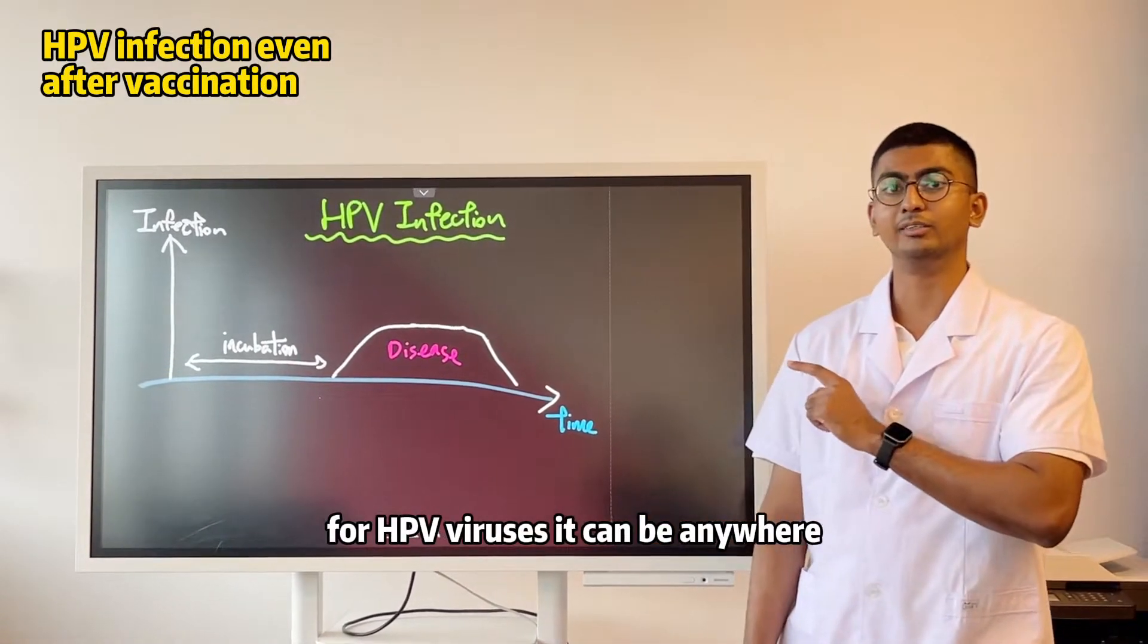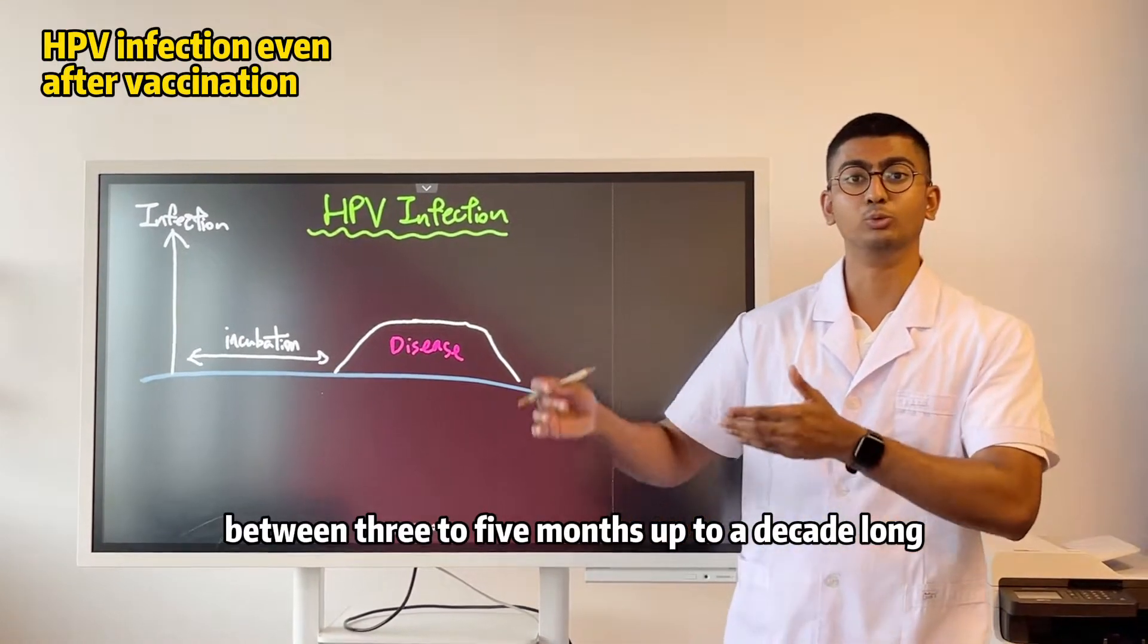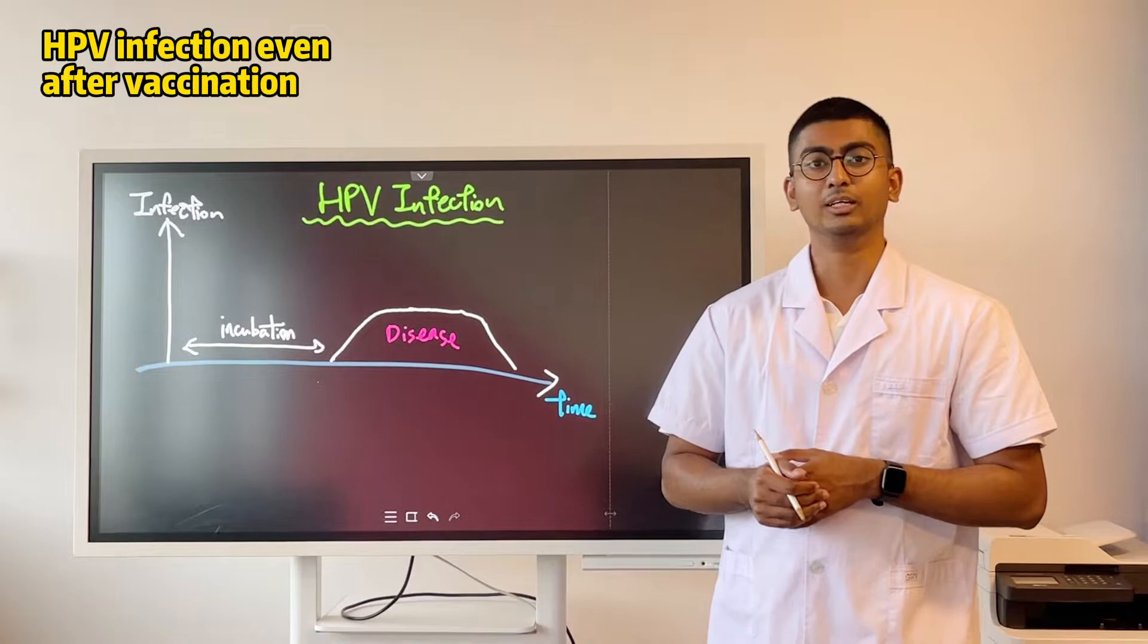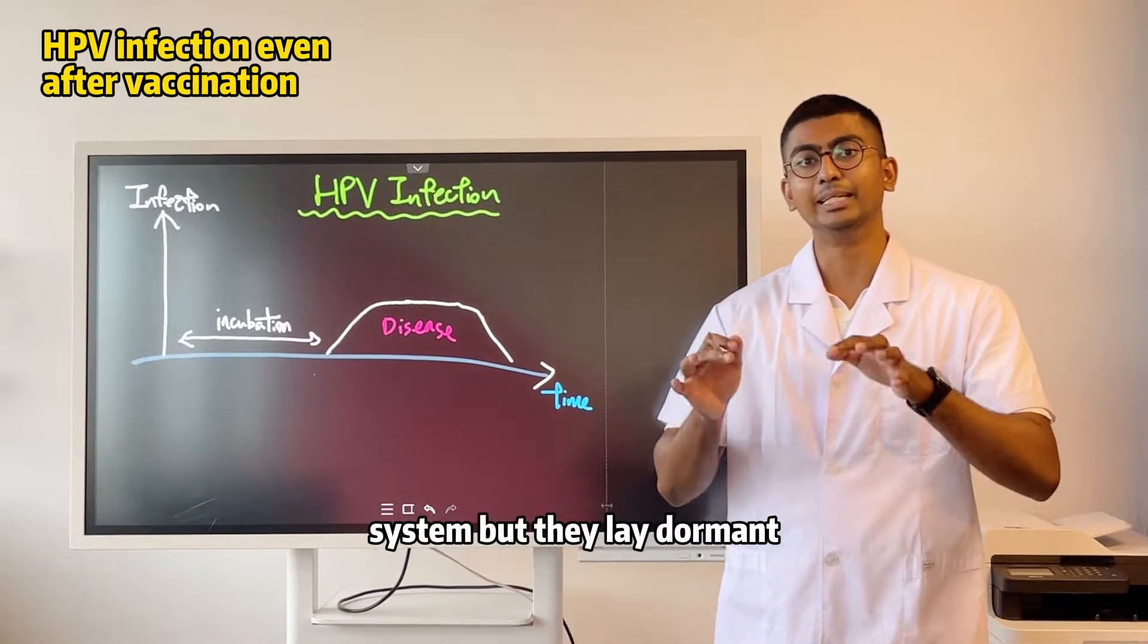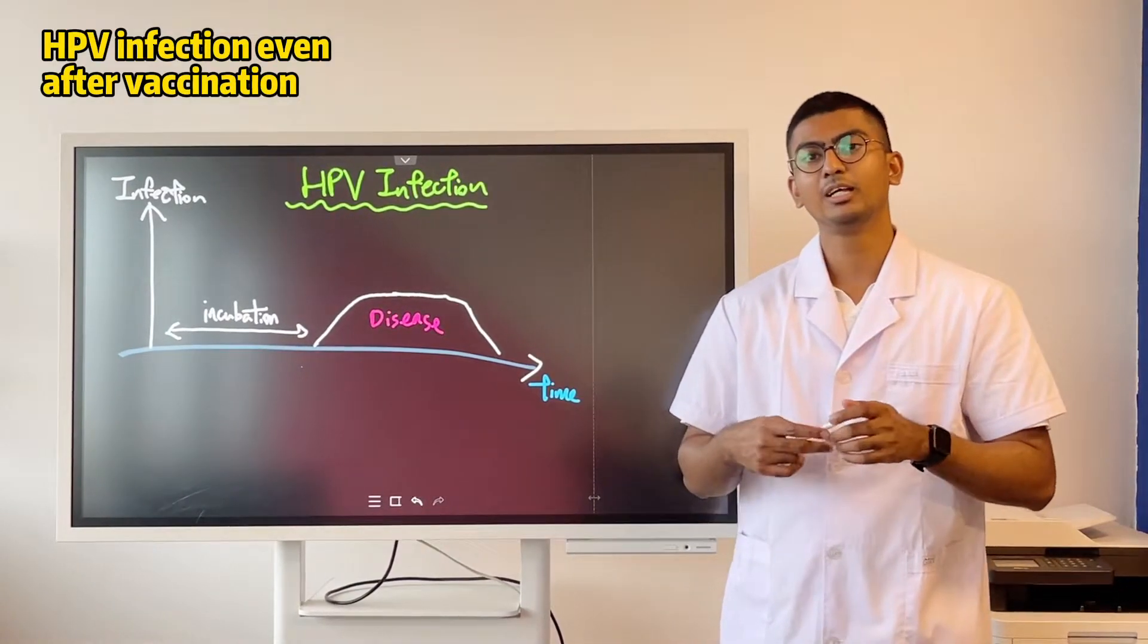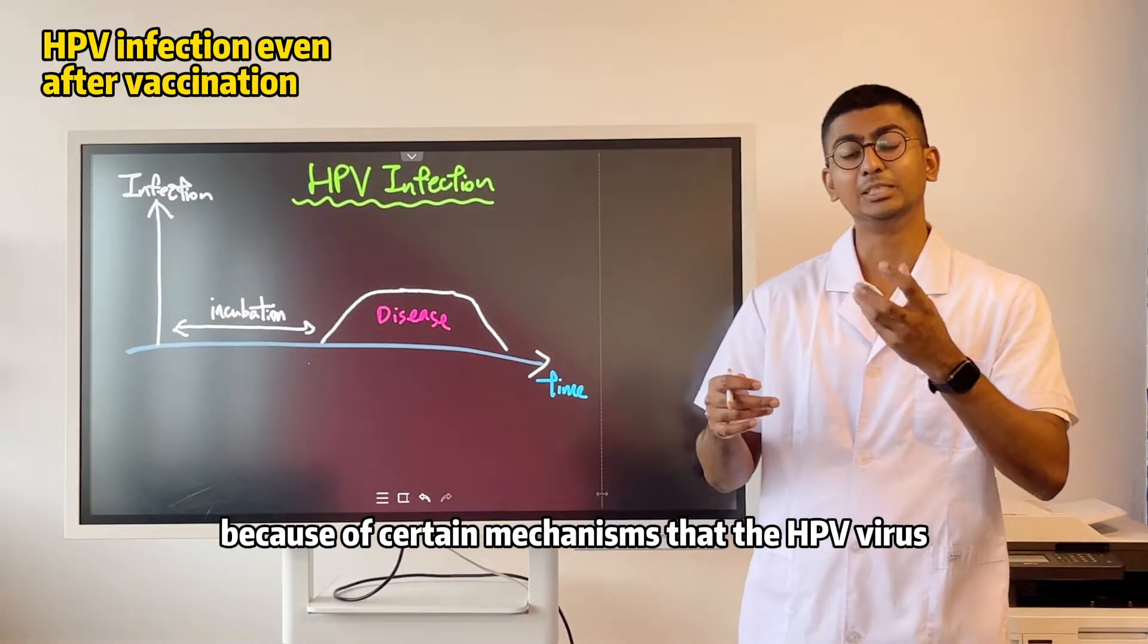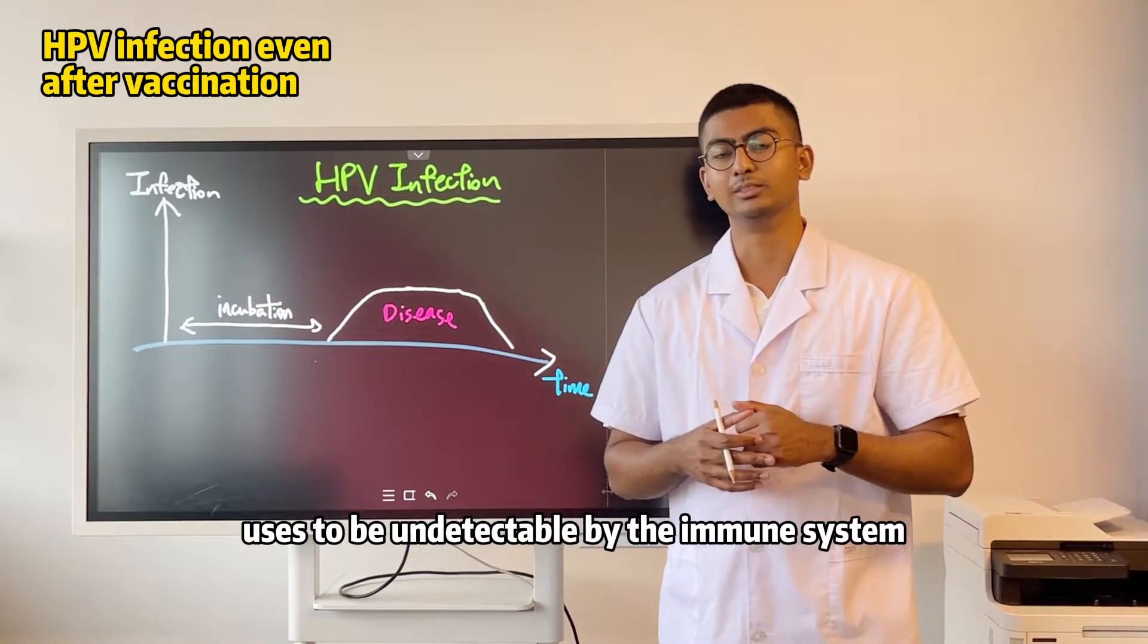And for HPV viruses, it can be anywhere between three to five months up to a decade long. So these viruses are already in your system, but they lay dormant. And they remain undetectable because of certain mechanisms that the HPV virus uses to be undetectable by the immune system.